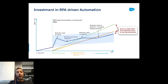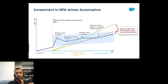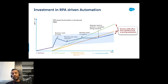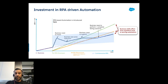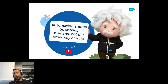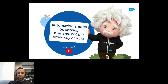Just as MuleSoft reframed point-to-point connections with API-led connectivity — system, process, experience layers — bringing entities into an organization to make them more sustainable and future-proof, we're taking the same approach with automation itself.